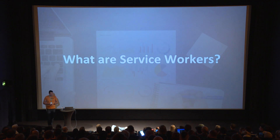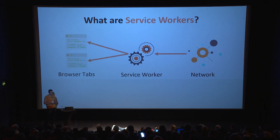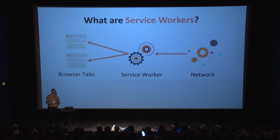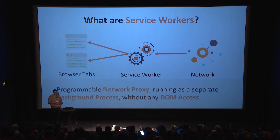Let's talk about service workers: how they work and how we leverage them. When we look at the browser, we typically have different browser tabs for the same website, and between those tabs and the network sit service workers. When you have two instances of the same page open, you only have one service worker. Service workers are very similar to web workers — they are a decoupled background process running JavaScript. The best definition: they are a programmable network proxy running as a separate background process without any DOM access. You cannot manipulate the page directly, but you can manipulate the network.